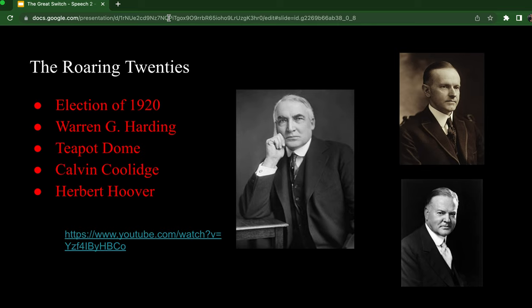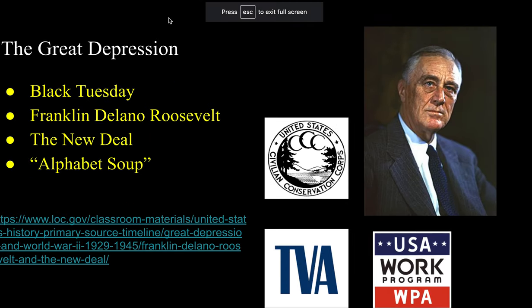Following the stock market crash of 1929, also known as Black Tuesday, this began the Great Depression. The Great Depression marks a time when we see the most significant shift in political viewpoints and political parties. Franklin Delano Roosevelt, a Democrat, was elected in 1932 in a landslide victory against Herbert Hoover. When Roosevelt first took power, he introduced a new way of thinking in America, which he titled the New Deal.